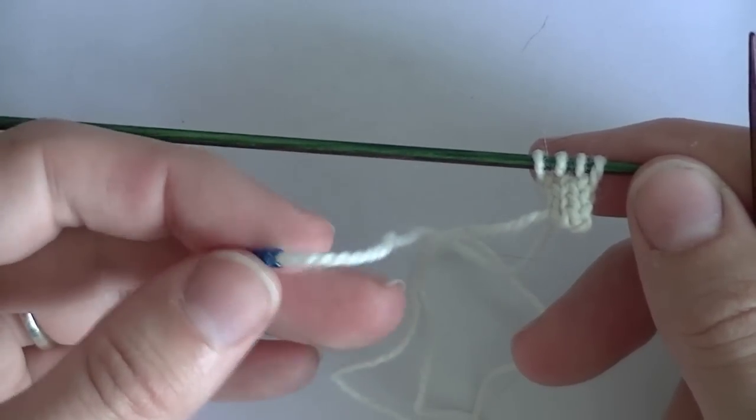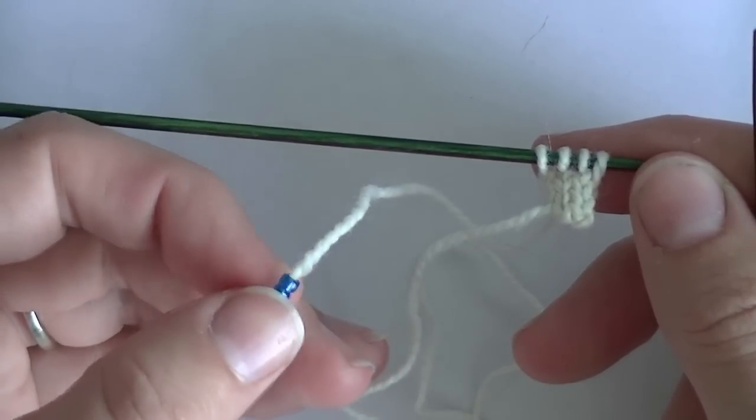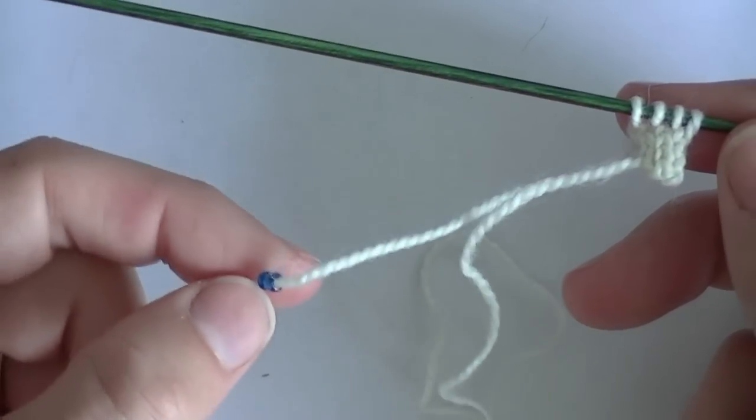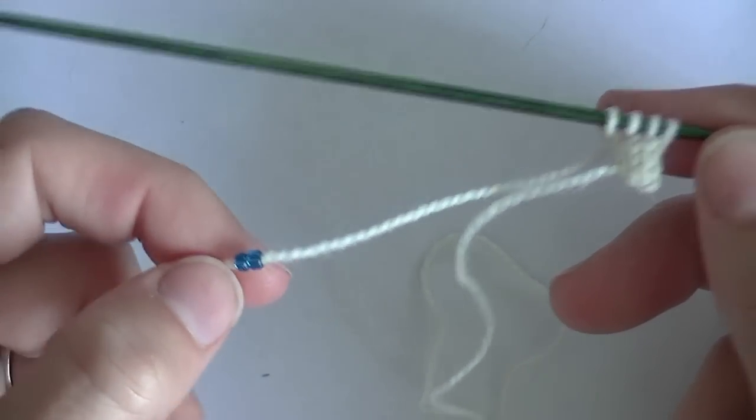This is a technique that you would use for projects such as my Black Mamba Bracelet, which you can get the pattern on Ravelry or in my shop, which is at CattailKnitting.com.